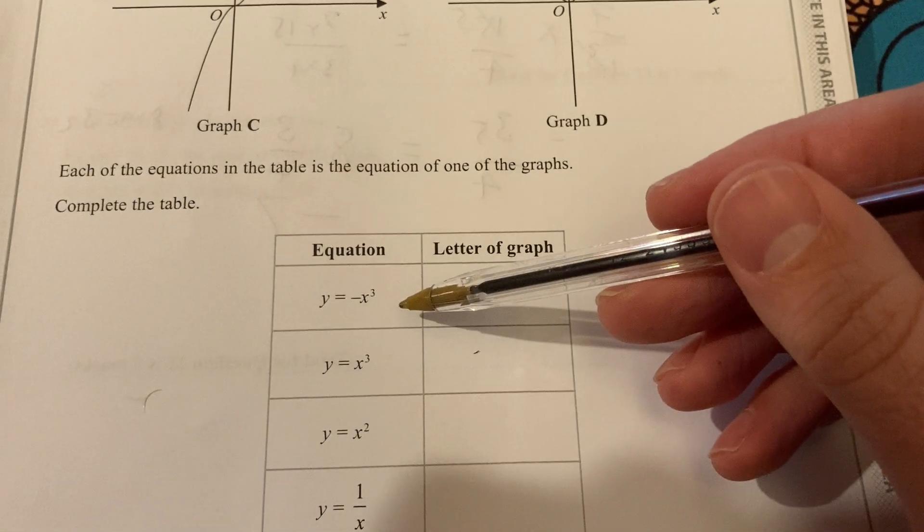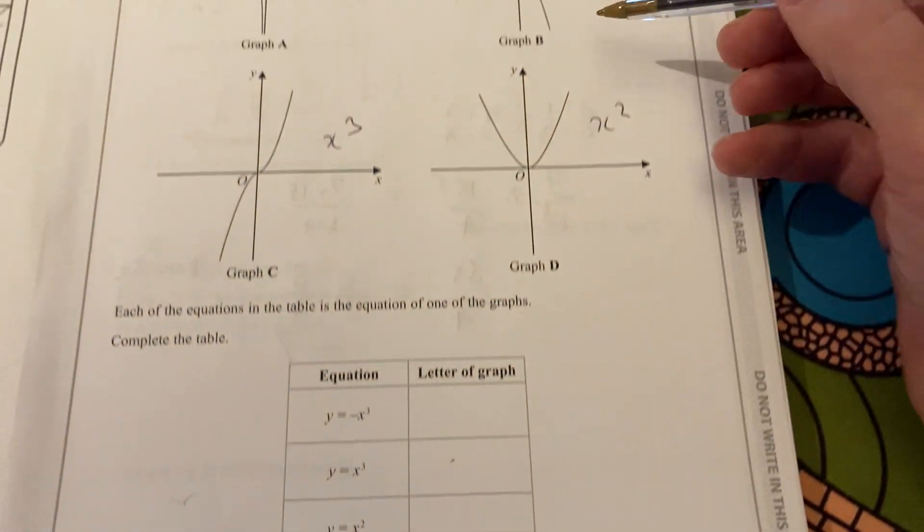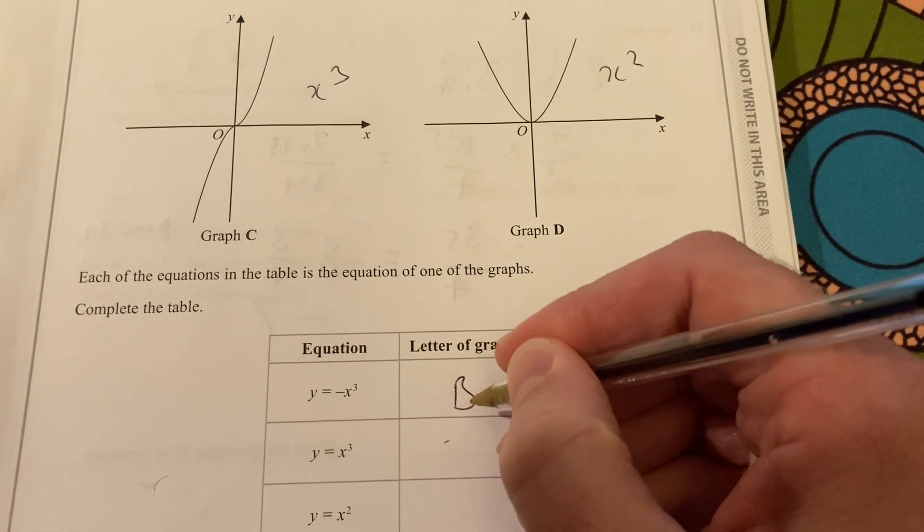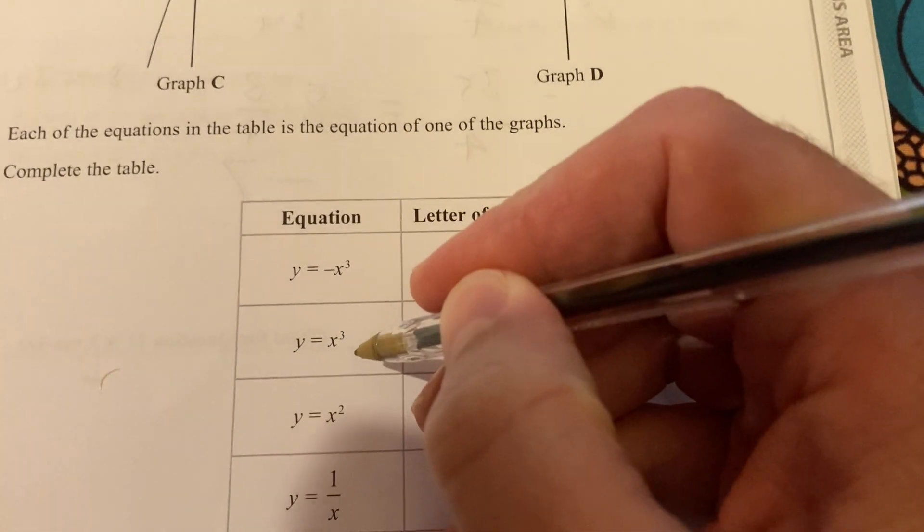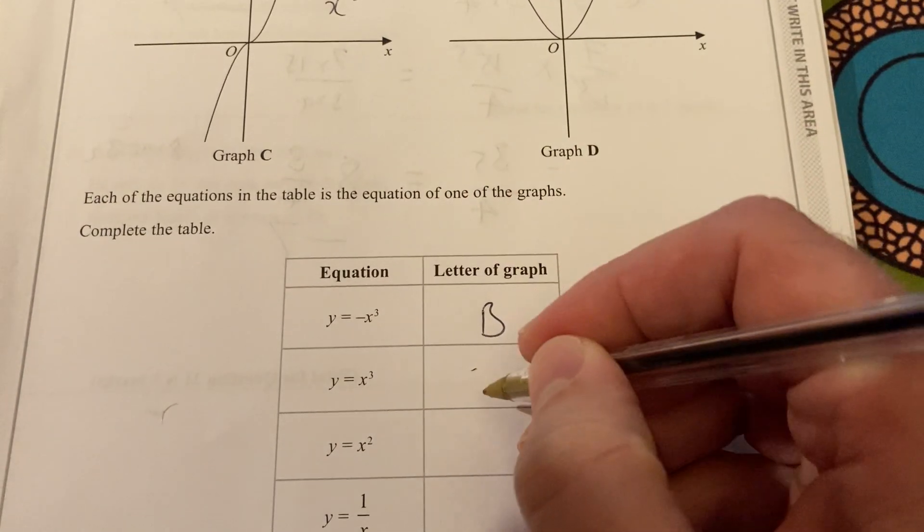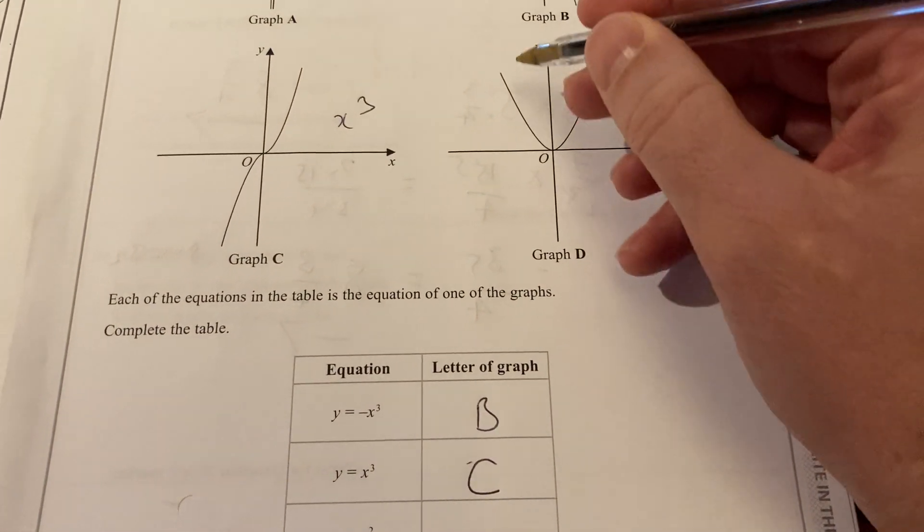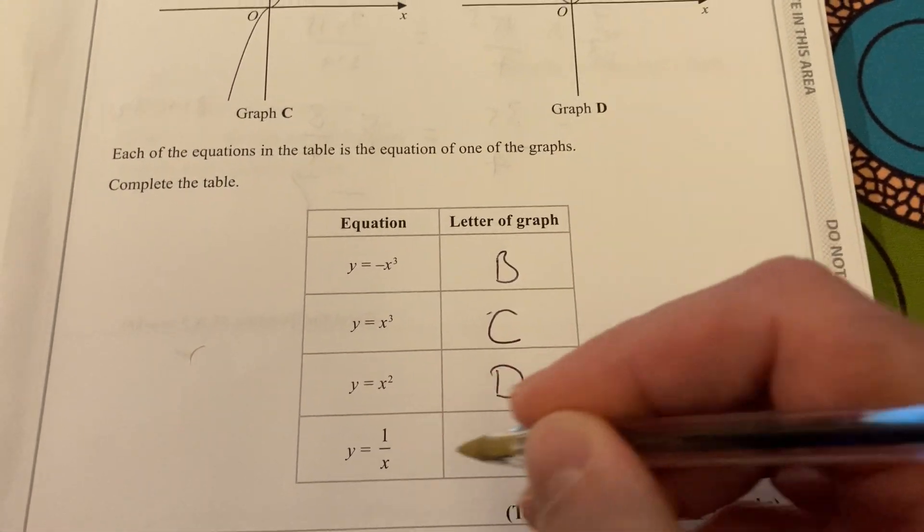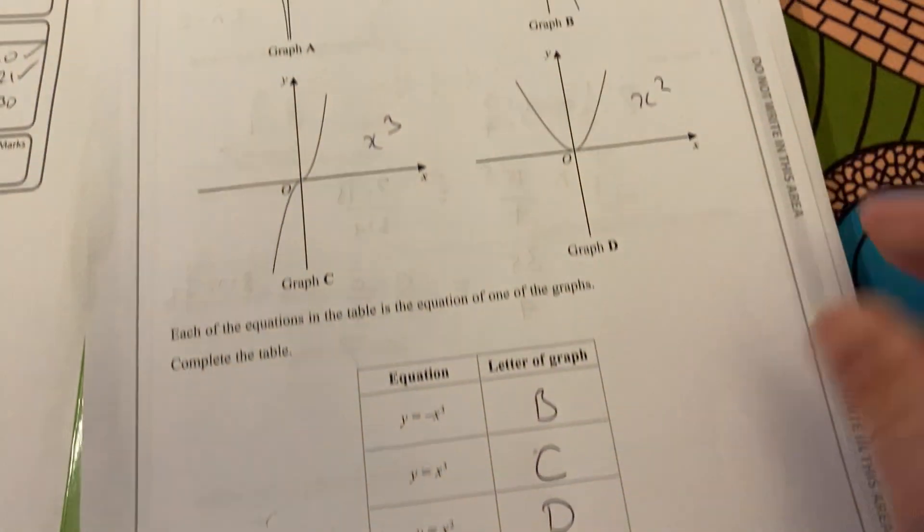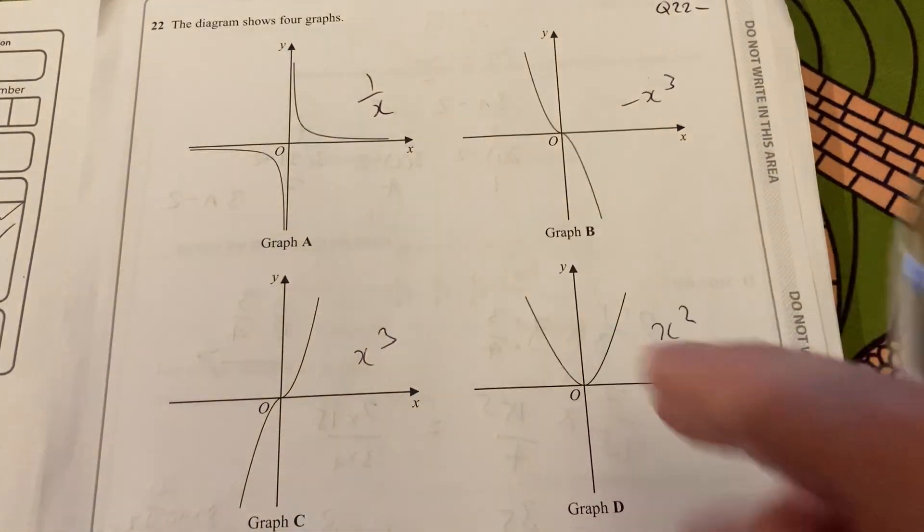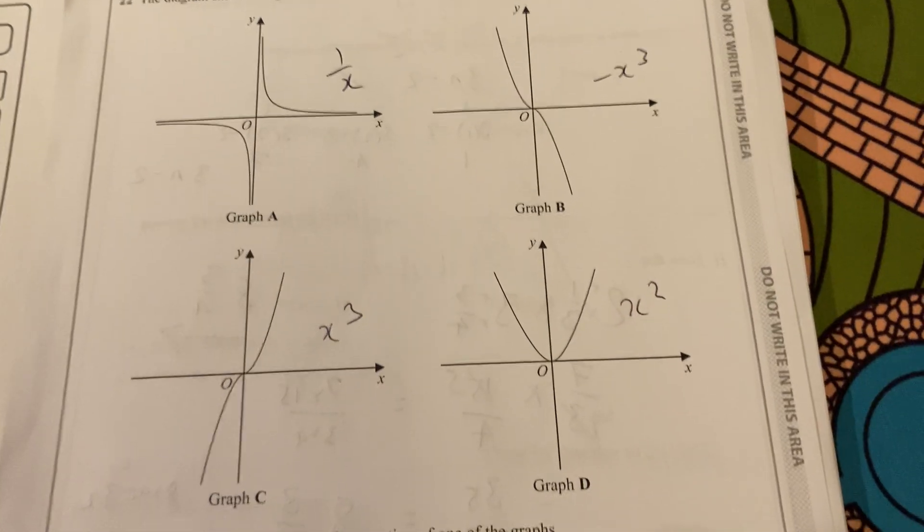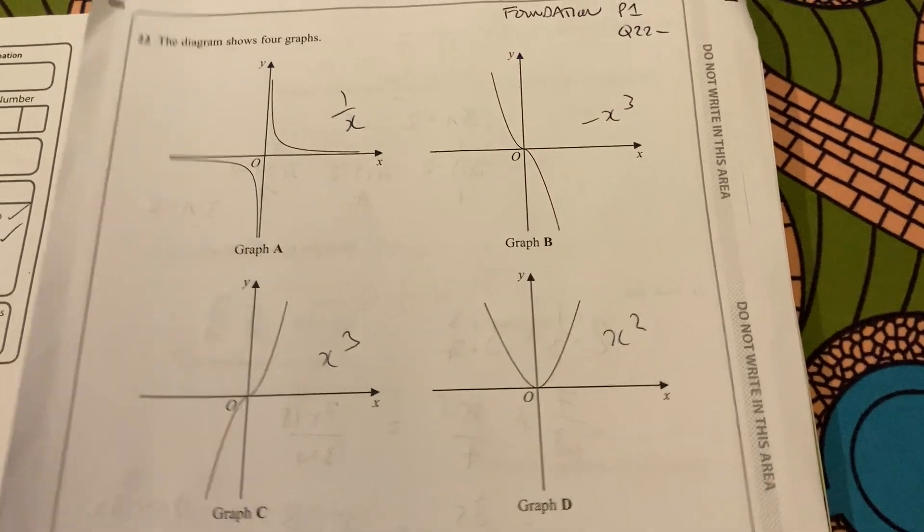So let's match that to this table. There is y equals negative x cubed. That one was B. This is the positive cubic, so that'll be C. That's the quadratic, where it'll always be positive, so that's D. And then A is the reciprocal, where it's asymptotic, as in it never touches the axis. Okay, so that's question 22.